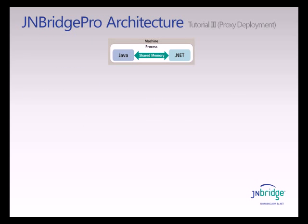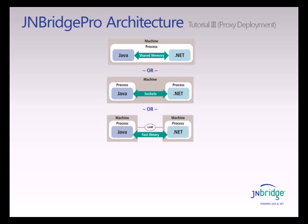As you now know, Jambridge Pro has a flexible architecture that allows the .NET and the Java code to run in the same process via shared memory on the same machine, or in different processes on the same machine, or on different machines across a local area network, or on different machines across the world.